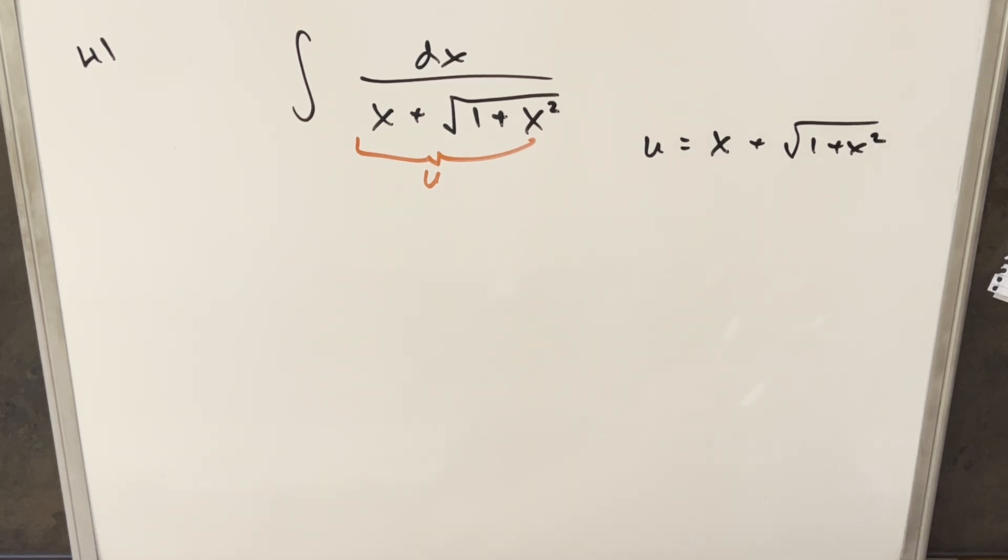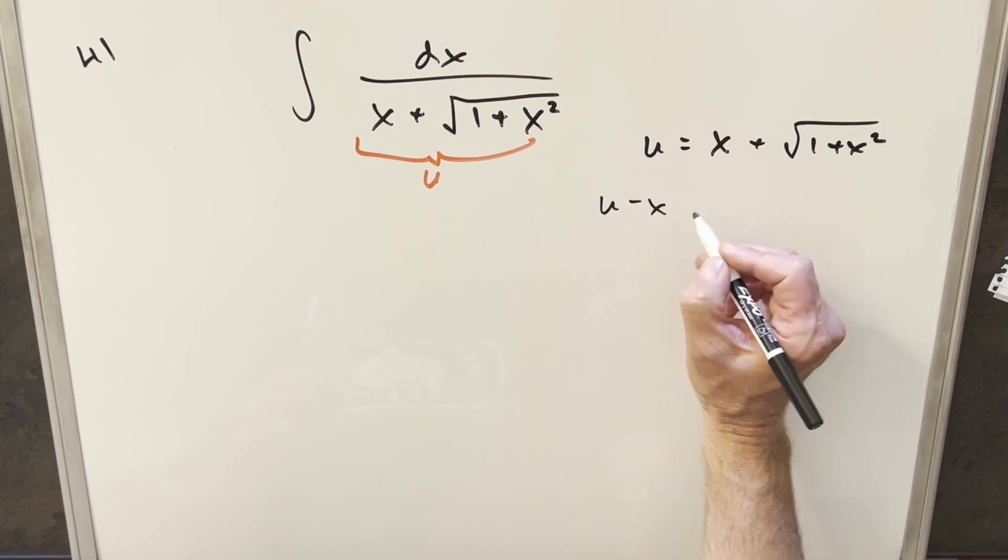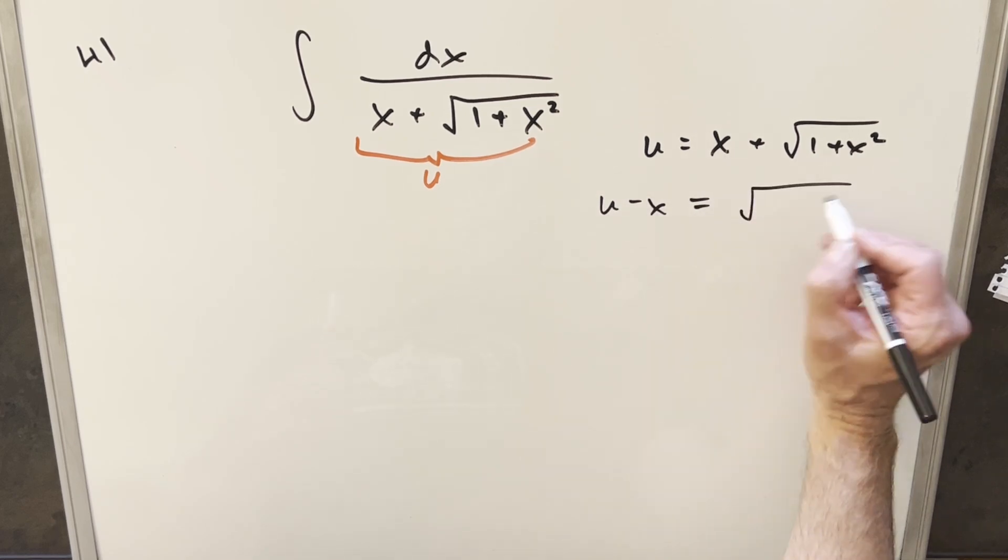And then before taking the derivative, I want to solve for x. So what I can do is subtract x on both sides. We'll have u minus x equal to square root 1 plus x squared.